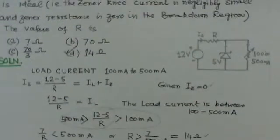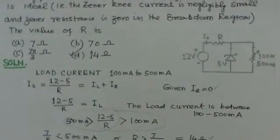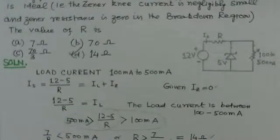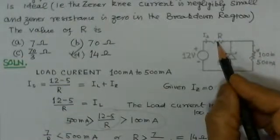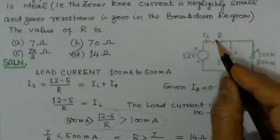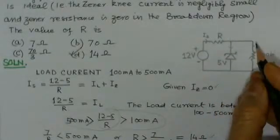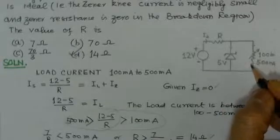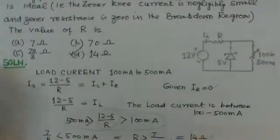The value of R being taken here to be minimum is because more the value for R, more will be the registration in this resistor and the efficiency of the Zener diode will be less in that case. Thank you.